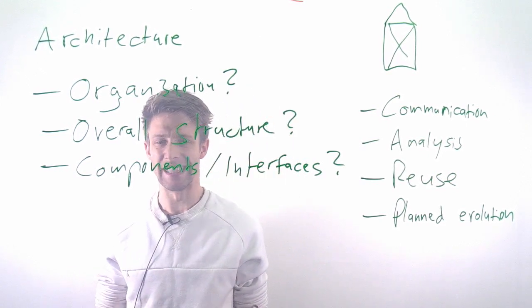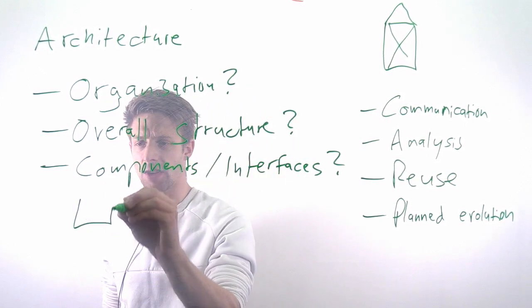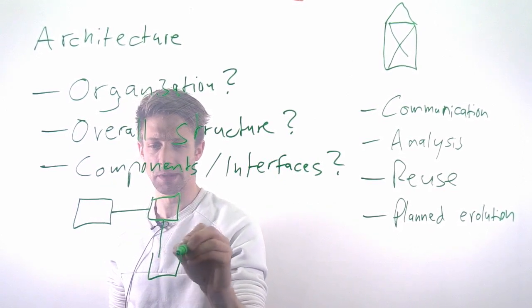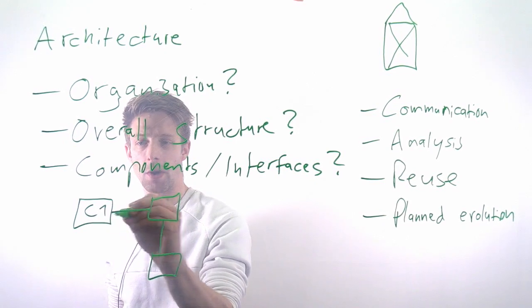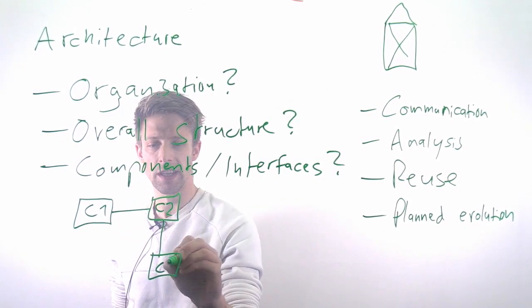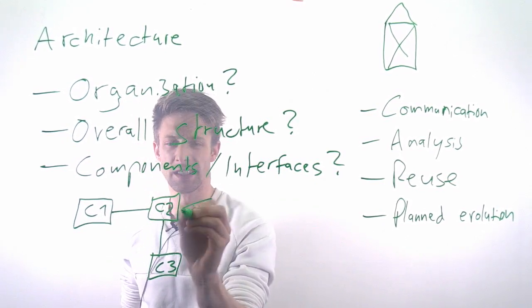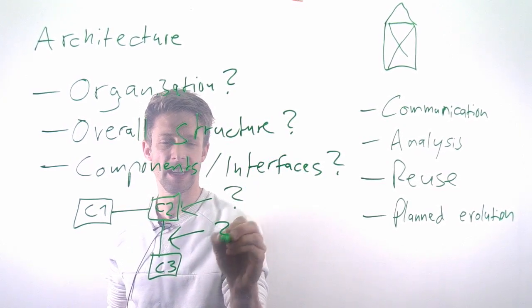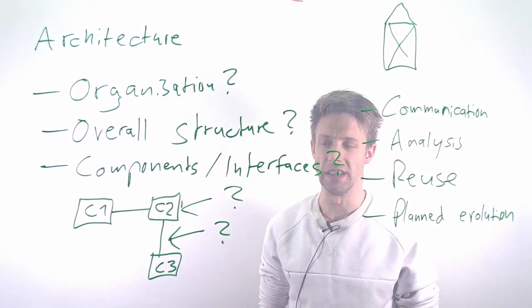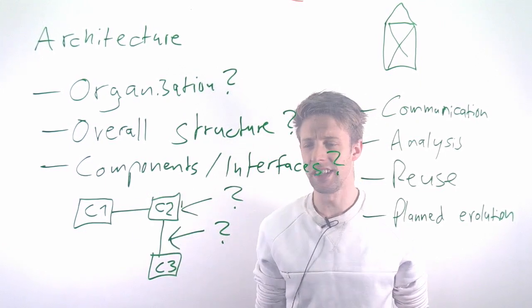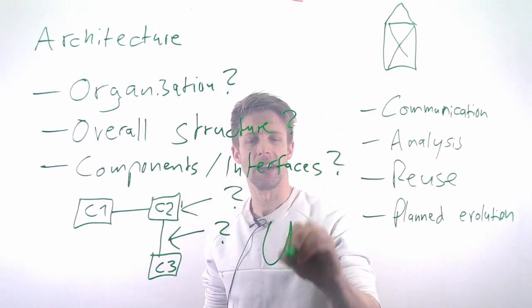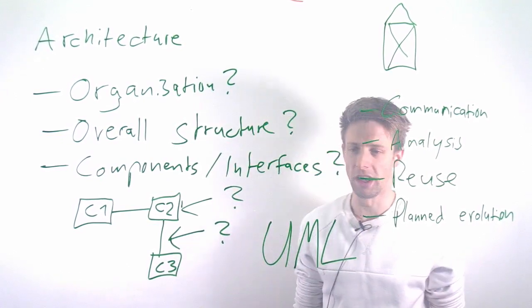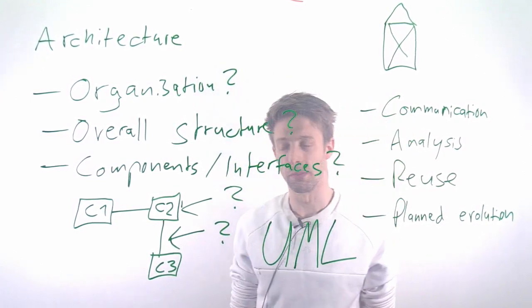There are typical ways to represent architecture. Common examples are box and line diagrams—diagrams that show the components in our system, what these components are, and more importantly, how they interact and what the interfaces between them are. For more detail, the Unified Modeling Language (UML) has a diagram called the component diagram.